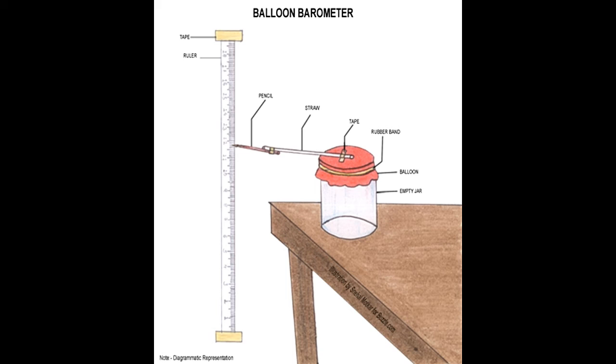The materials required for making a balloon barometer are listed below. You will need: a glass jar or an empty tin with wide opening, a sufficiently large balloon, rubber band, scissors, pencil, plastic straw, and ruler.